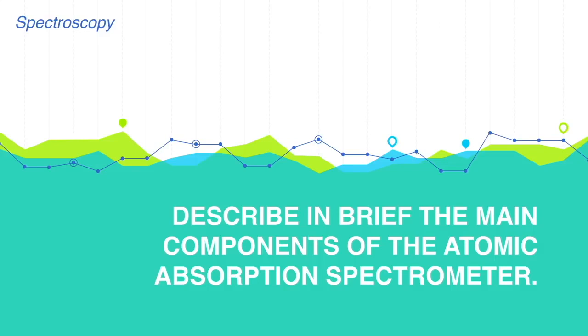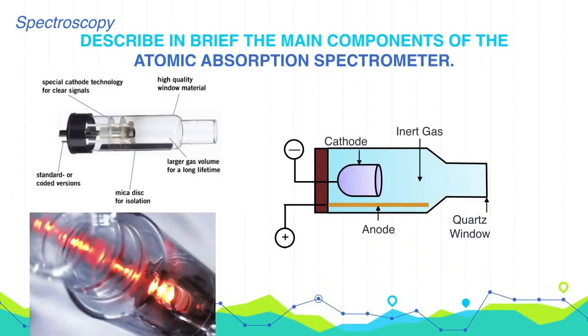Describe in brief the main components of Atomic Absorption Spectrometer. The main components of the instrumentation used are as follows.